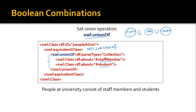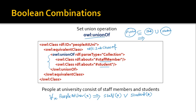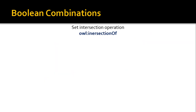How do we represent this in first-order logic? Since we have a subclass relation, we use a forward implication: for all X, if PeopleAtUniversity(X), then Staff(X) OR Student(X). This is the corresponding first-order logic representation of the RDF structure using OWL unionOf.